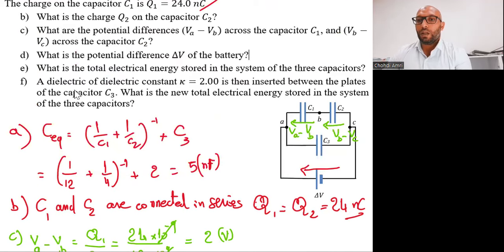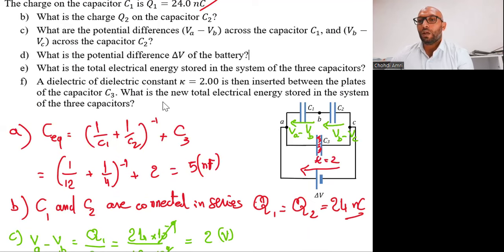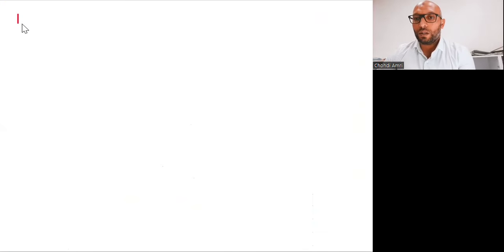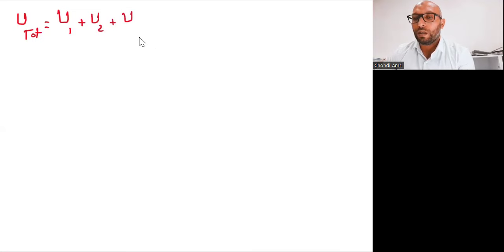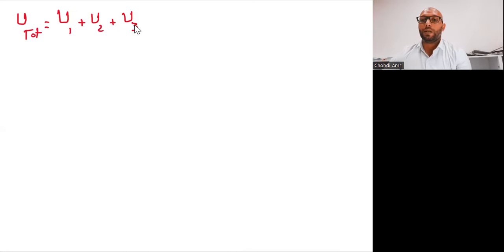Last question: a dielectric of dielectric constant kappa equal 2 is inserted between the plates of capacitor C3. We will fill the space between the two parallel plates of C3 with a dielectric where the dielectric constant equals 2. What is the new total energy stored in the system? The energy stored in the third capacitor will be different because we inserted the dielectric.